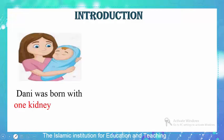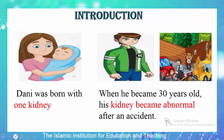As we know, normally a human being has two kidneys, but he can survive with one kidney. Danny is a boy who was born with one kidney. Once Danny became 30 years old, due to a car accident, his kidney became abnormal.